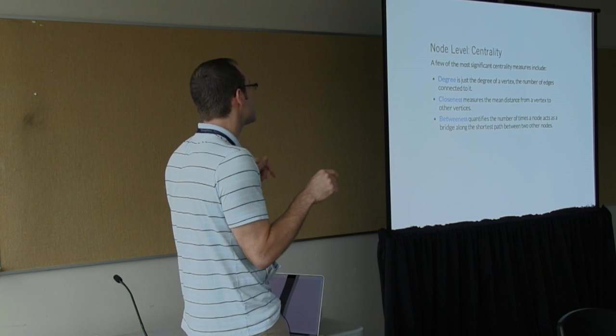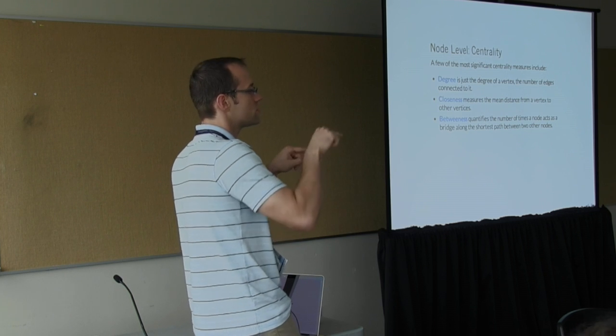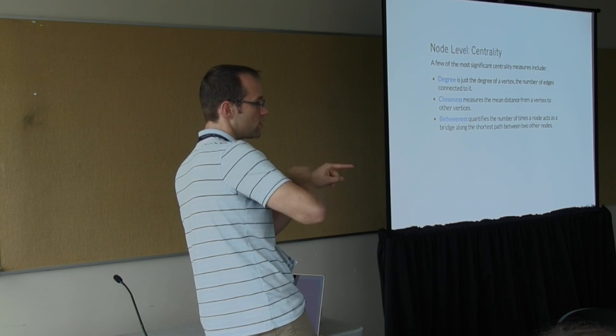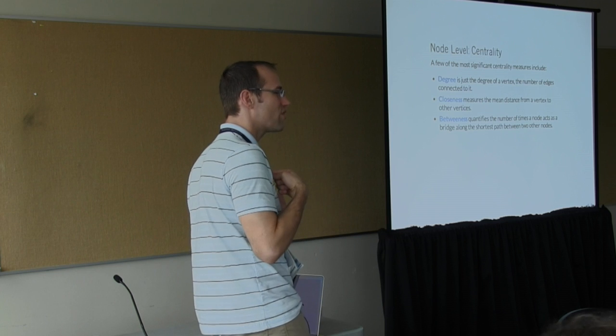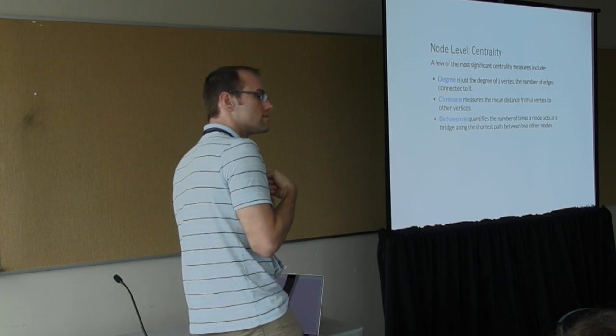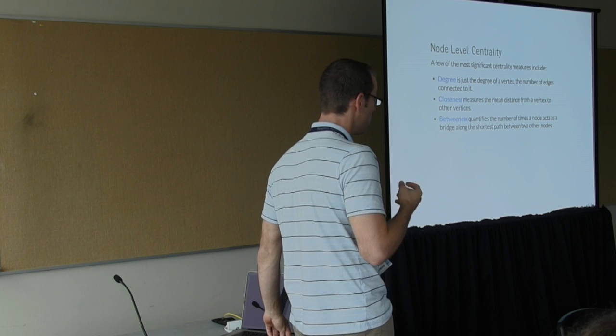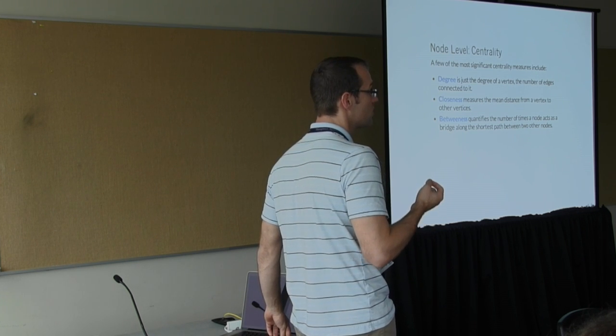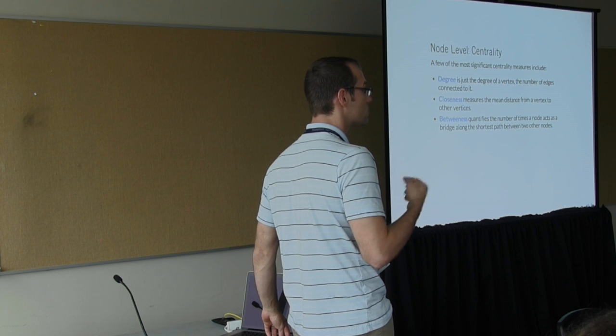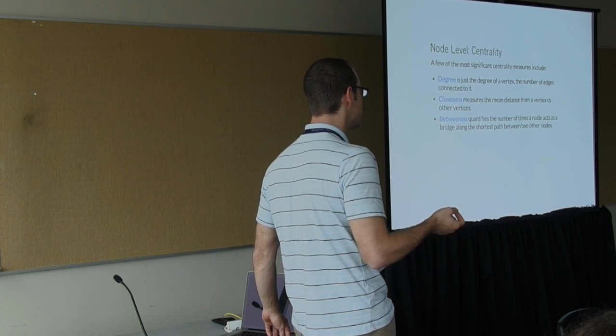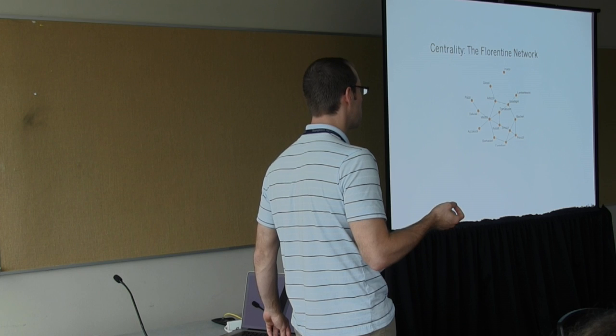Betweenness is the number of times a node acts as a bridge. So if you're to traverse the graph and shortest paths, if you have to go through me a lot, then I'm important. There's a great deal of consequence for these sorts of distinctions in the real world. And in the case of the Florentine network, this consequence came in the form of the Medici family dominating the political scene.